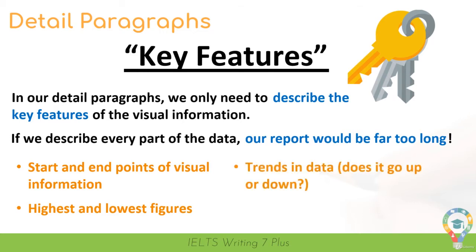It's also very important that we describe the trends in the data. For example, in a line graph, does the data move up or drop down? This is something we report in the detail paragraph. And finally, similarities between groups — to achieve a Band 6 and definitely a Band 7, you must make some comparisons. For example, two sets of data may drop together. The IELTS examiner will award you extra points for making such comparisons.